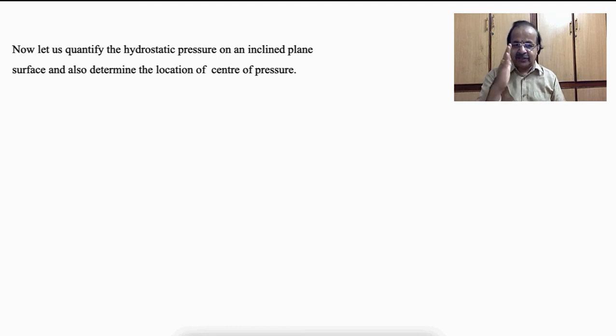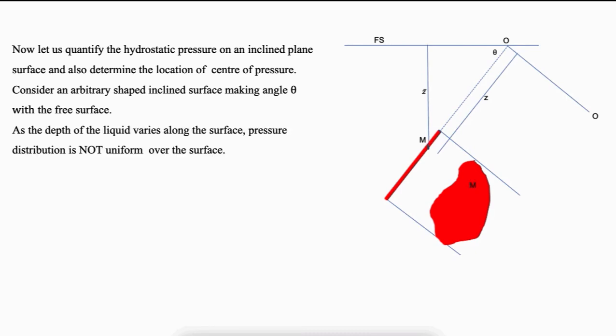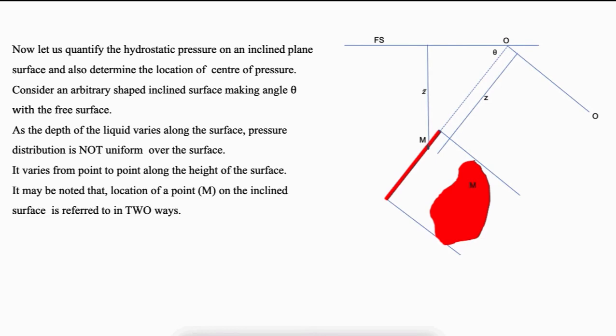As shown in the figure, consider an arbitrary shape inclined surface making an angle theta with the free surface. In the figure, FS represents the free surface. A glance at the figure indicates that in this case also, the depth of the liquid varies along the surface. We know from the hydrostatic law that P equals gamma H — that is, pressure varies with the depth of the fluid. So similar to hydrostatic force acting on a vertical face, pressure distribution is not uniform over the surface. It varies from point to point along the height of the surface. Unlike the case of vertical plane surface, the location of a point on the surface, say point M, is referred to in two ways.